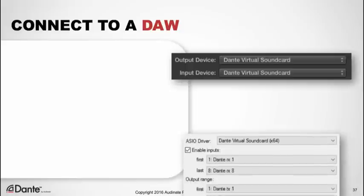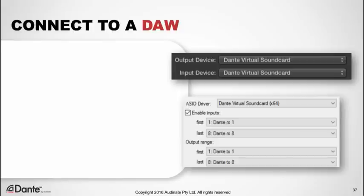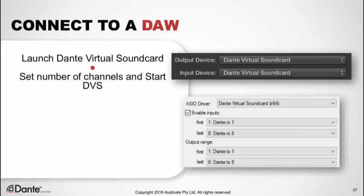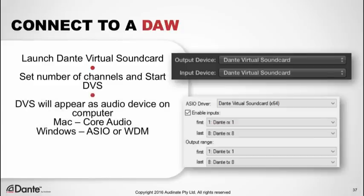When Dante Virtual Sound Card is turned on, it appears as a regular audio device in your computer, just like any audio hardware connected via USB or similar. To connect it to a DAW, simply launch Dante Virtual Sound Card, set the number of channels you want it to represent, and start it. On Mac OS X, DVS appears as a standard Core Audio device. On a Windows PC, Dante Virtual Sound Card supports ASIO — very common for high-performance audio recording software — or WDM Windows drivers, common for consumer audio products such as Windows Media Player. In your audio application, simply open the audio preferences and choose Dante Virtual Sound Card from the list of available audio devices.